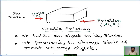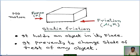But there is no motion. This is static friction. Static friction holds an object in its place. Static friction prevents any object from changing its state of rest.